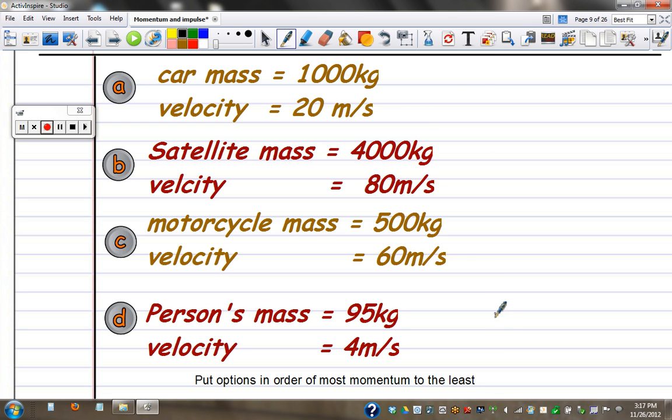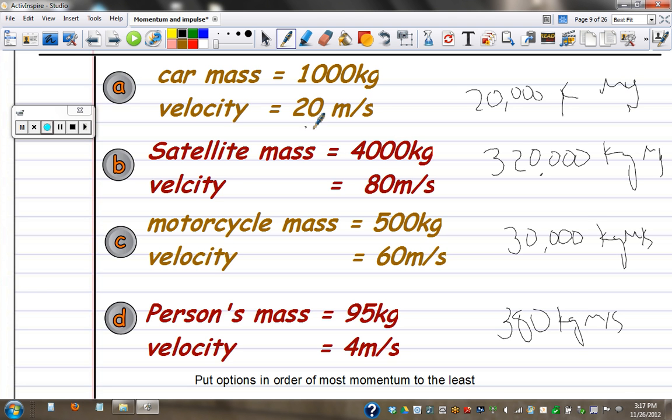Here's the answers. This is 380 kilogram meters per second, 30,000 kilogram meters per second, 320,000 kilogram meters per second, and 20,000 kilogram meters per second. So you should have had it written out as BCAD.